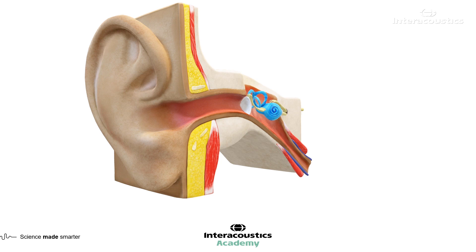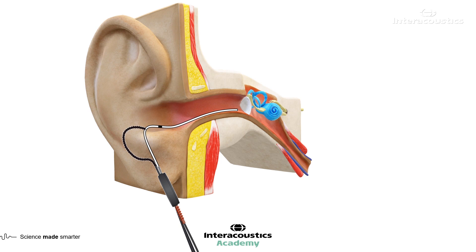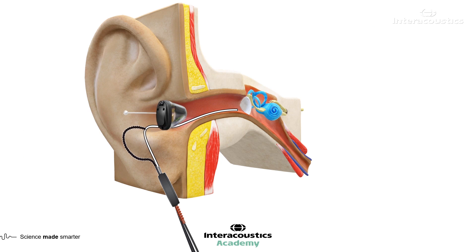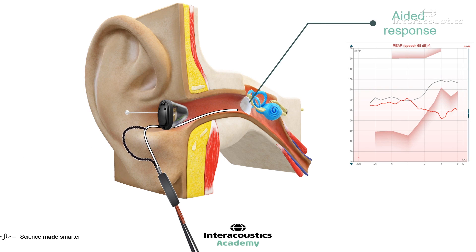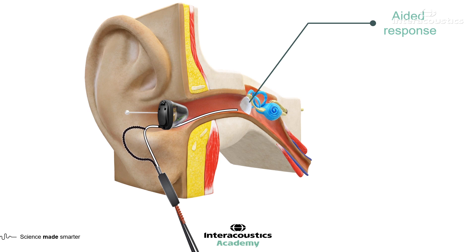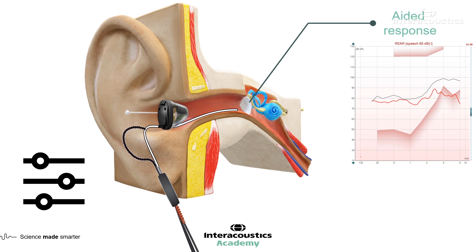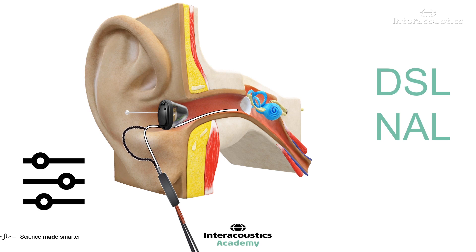We can use real ear measurements to establish the level of sound that reaches the eardrum specifically. We do this by placing a small tube that acts as a microphone, which gets calibrated to render it acoustically invisible. We can record this measurement unaided — which tells us the natural resonance of that person's ear canal — and then insert a hearing aid and measure again with the aid in place and switched on. If we aren't happy with the level of sound reaching the eardrum, we can adjust the gain and remeasure. This is where prescription targets come in; we recommend using DSL or NAL, as they have a large evidence base and provide the optimum amount of gain across the frequency spectrum.